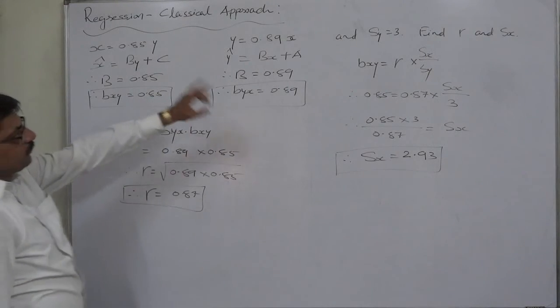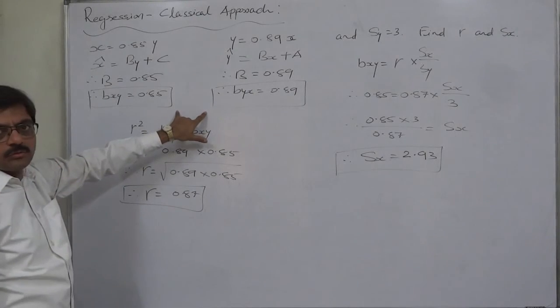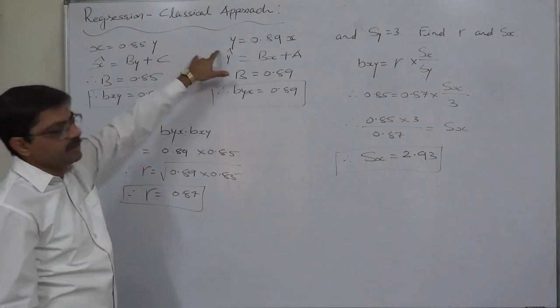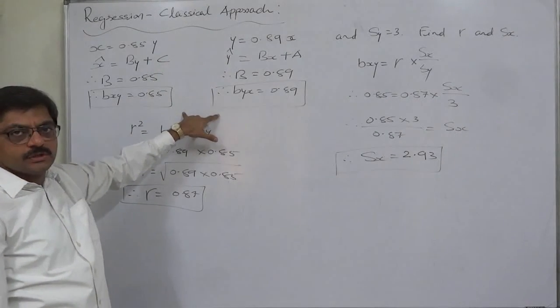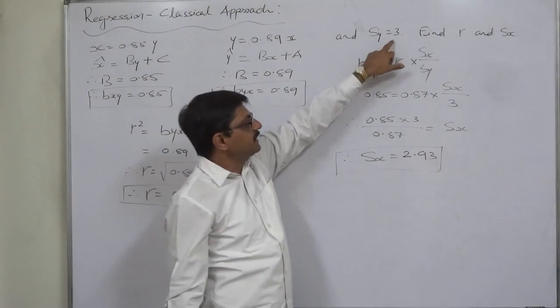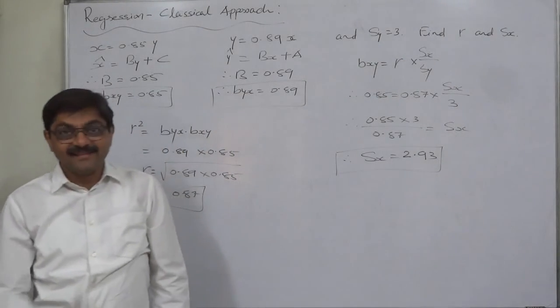The important thing is to find out coefficient of correlation, we have to find out the two coefficients of regression from the available equations, and then on the basis of any one of the coefficient of regression and the available standard deviation, we can easily find the other standard deviation. That's it. Thank you very much.